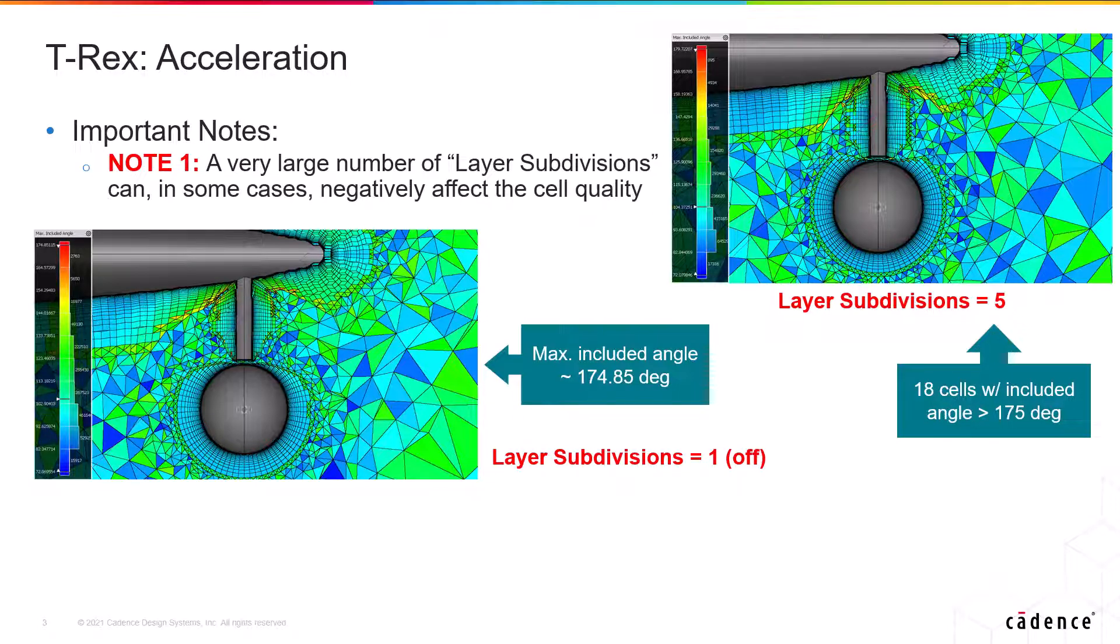But if we set the acceleration to maximum performance, we actually get 18 cells with a max included angle greater than 175 degrees. But the cell quality degradation is actually found to be very minimal for layer subdivision set to 3 or less. So keep that in mind.